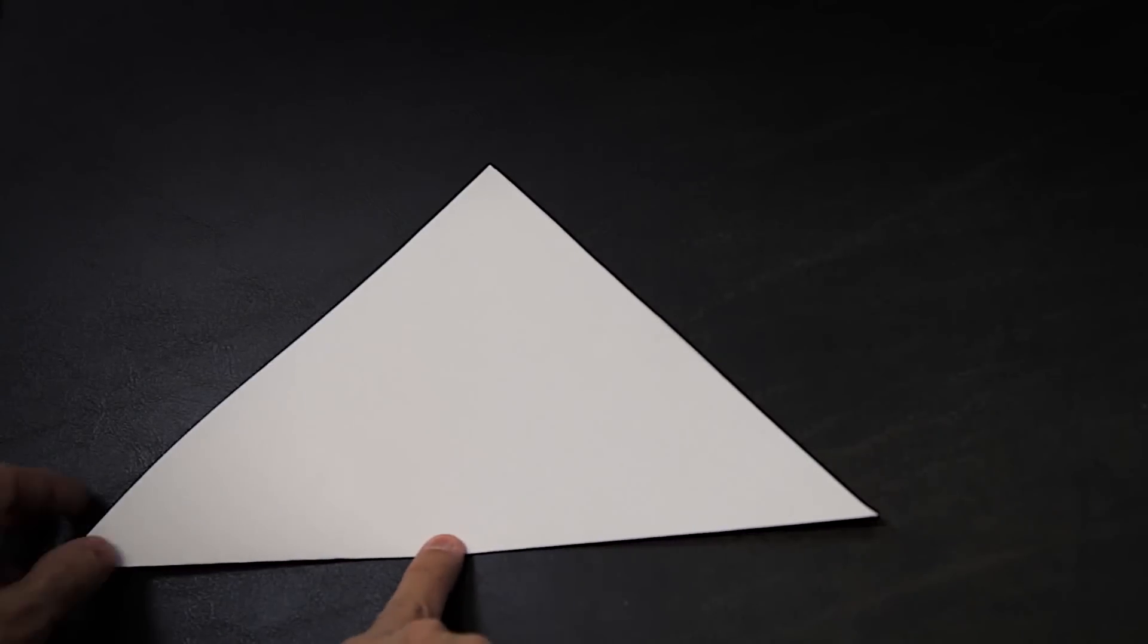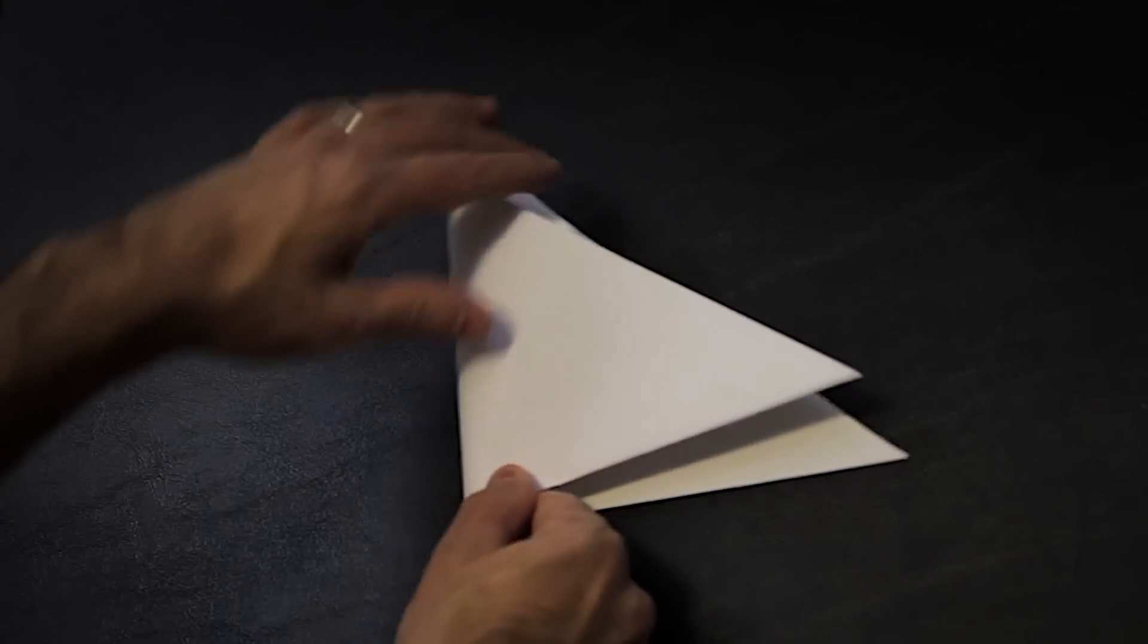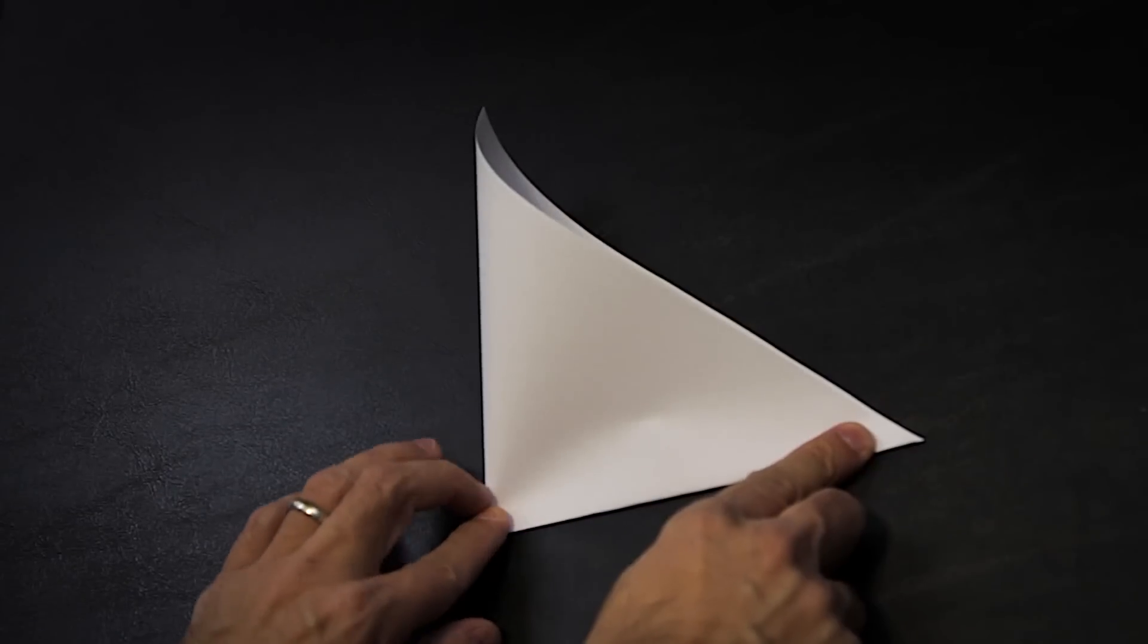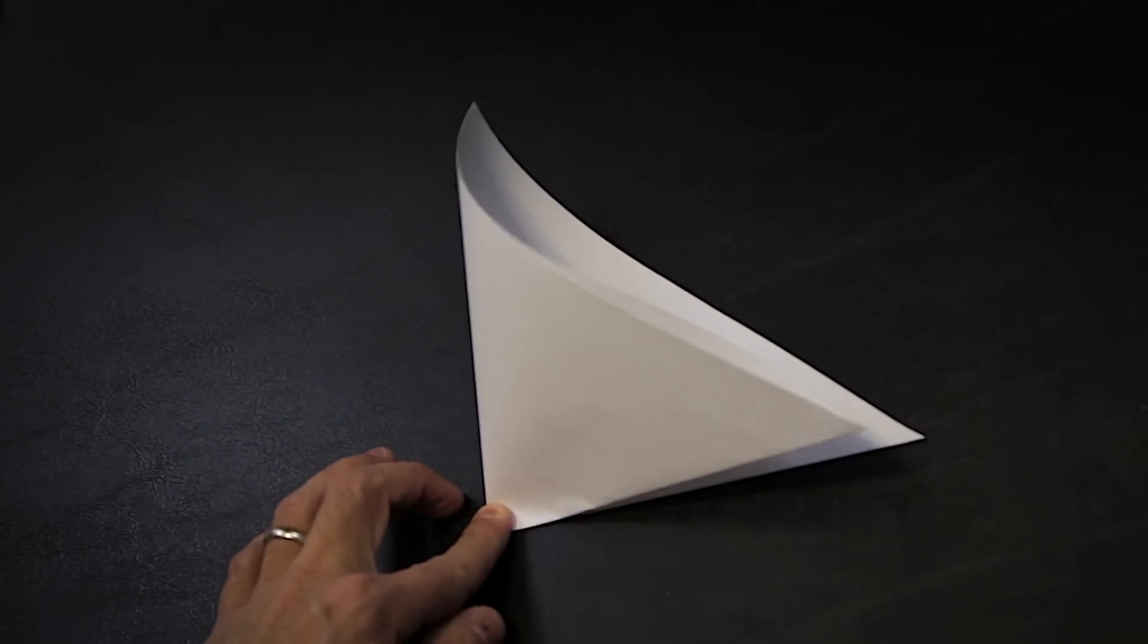Now find the middle of this folded edge by joining the two outer corners together. Make a light crease along the folded edge to mark the center.